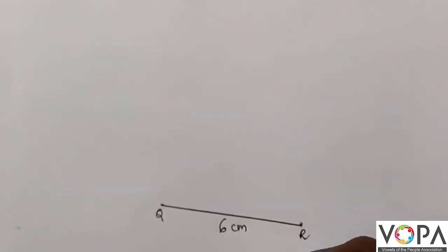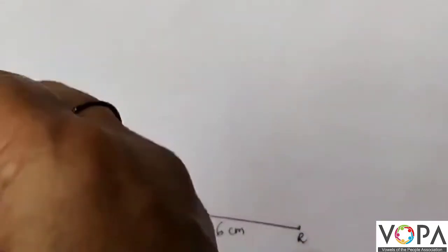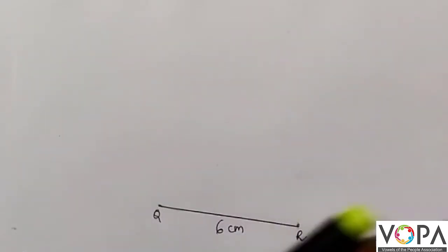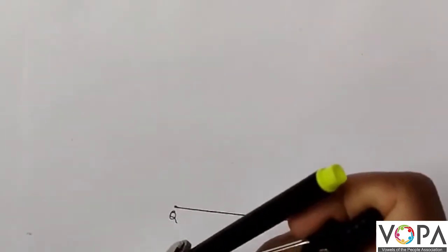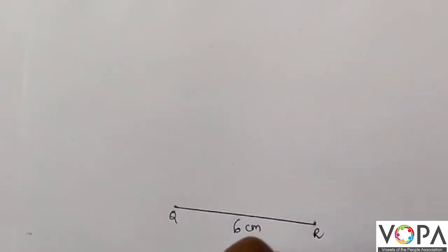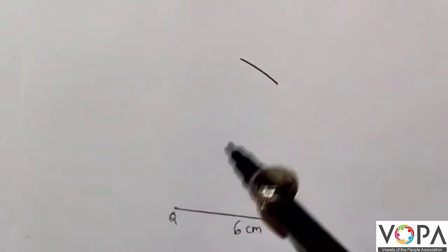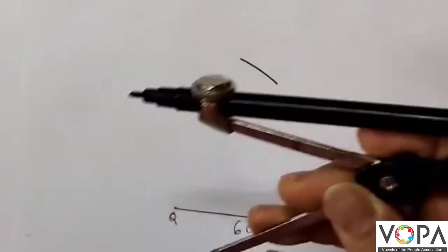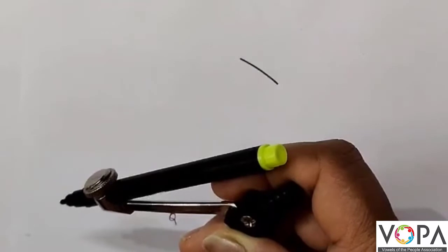Now with the compass, draw arcs for PQ at 7 cm and PR at 5.5 cm.